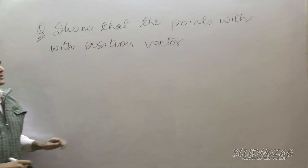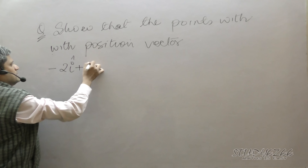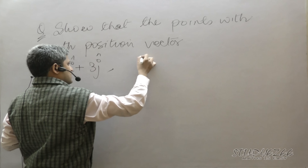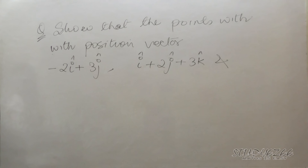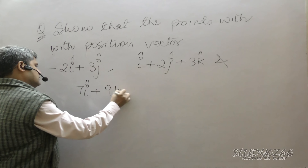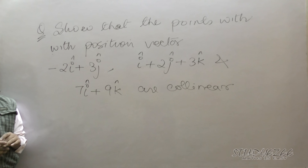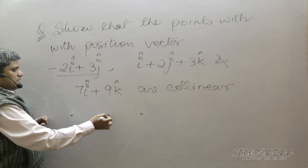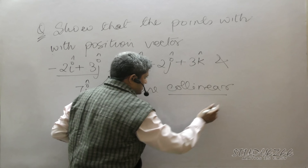The points with position vectors minus 2i plus 3j, i plus 2j plus 3k, and 7i plus 9k are given. You have to prove that these three points are collinear. Collinear means that they lie in a straight line.